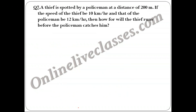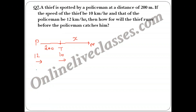Question 7: A thief is spotted by a policeman at a distance of 200 meters. The thief runs at 10 km/hr and the policeman runs at 12 km/hr. How far will the thief run before the policeman catches him? Since both run in the same direction, the time of travel for both is the same when caught.